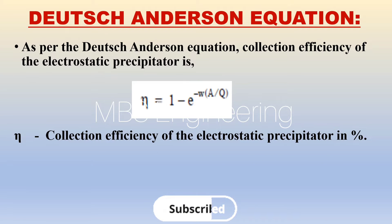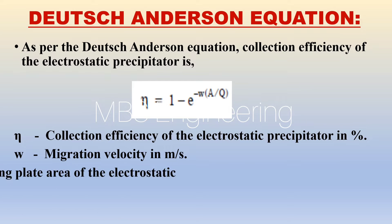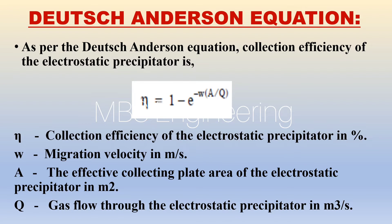The variables are defined as follows: eta — collection efficiency of the electrostatic precipitator, in percentage. Omega — migration velocity, in meters per second. A — effective collecting plate area of the electrostatic precipitator, in square meters. Q — gas flow through the electrostatic precipitator, in cubic meters per second.